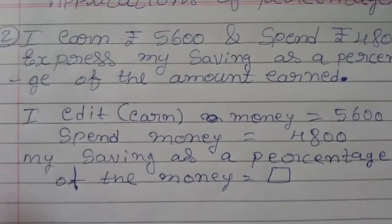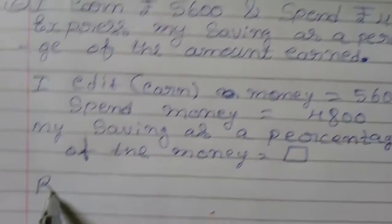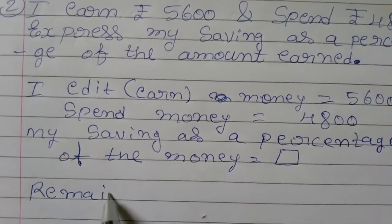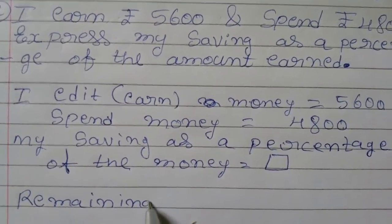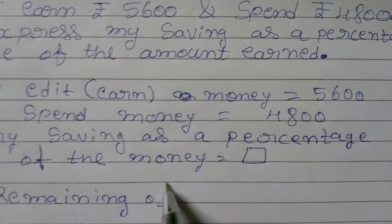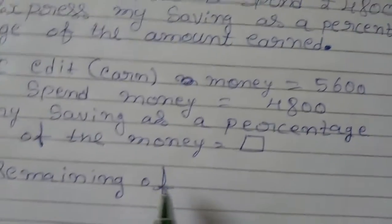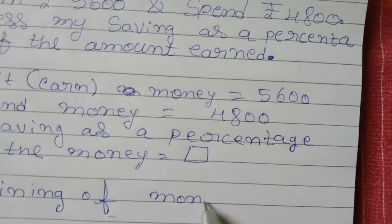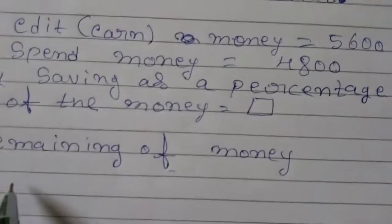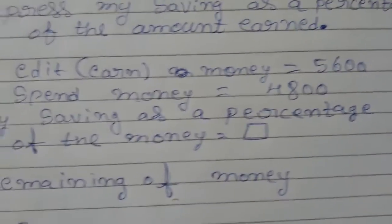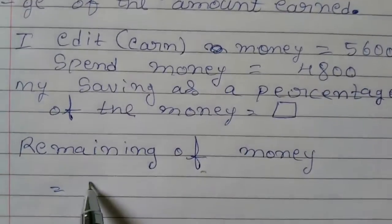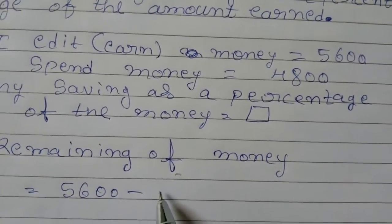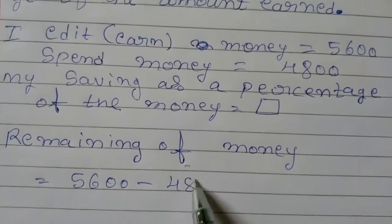So, remaining of money. Money equals $5,600 minus $4,800, which equals $800.